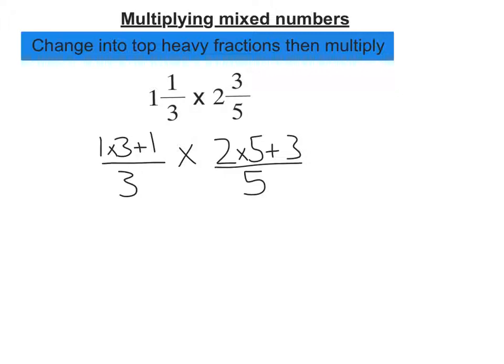So 1 times 3 is 3, plus 1 is 4, so that's 4/3. For the other one, 2 times 5 is 10, plus 3 is 13, so that's 13/5.